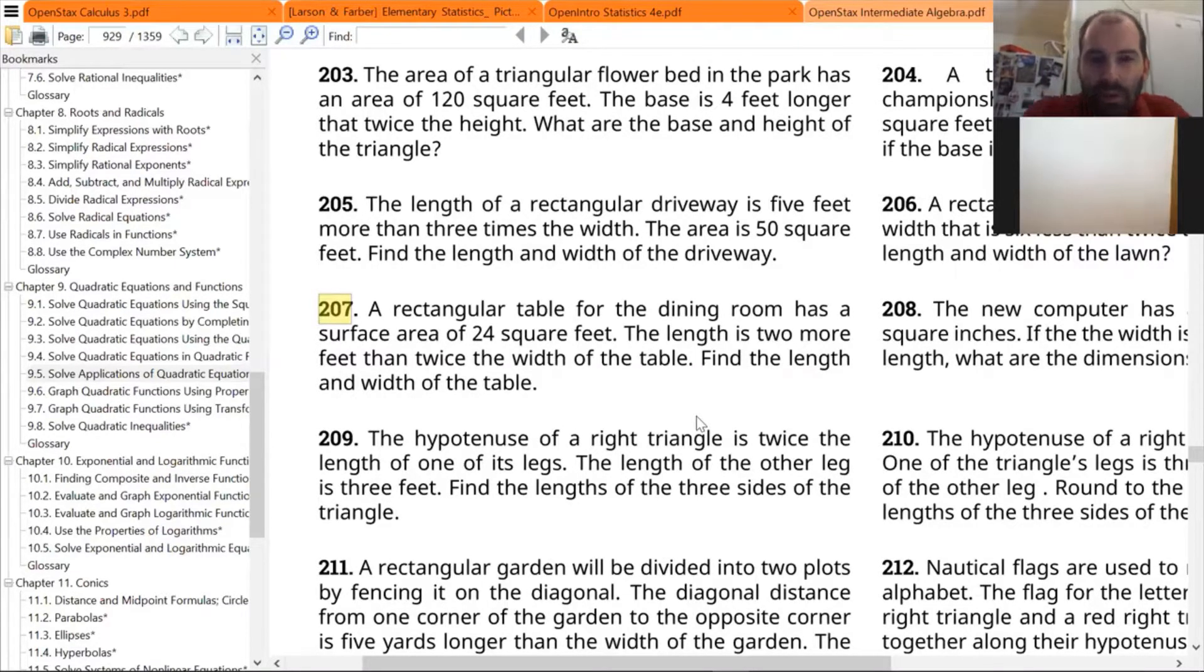Okay, so we know the surface area, 24. I'm going to just start writing these things down, and then we'll go to the paper here. So I'm going to write down on the paper that we know that the area is 24. The length is two more feet than twice the width. Think about what equation that gives us between the length and the width, and then find the length and the width.